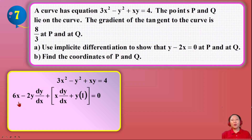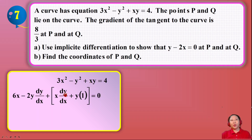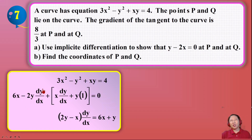We set up the implicit differentiation. Differentiating 3x² gives 6x; differentiating y² gives 2y · dy/dx, because we are doing this implicitly. Then for the xy term we use the product rule: copy x · differentiate y, plus copy y · differentiate x. We then need to rearrange the whole expression — bringing the 2y term to the right and grouping the dy/dx terms together.